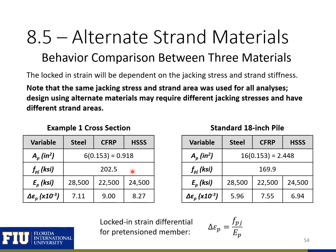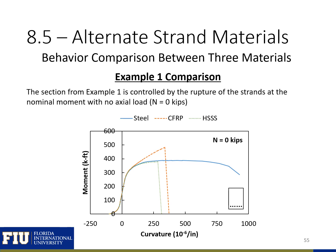For the rectangular beam from example 1 with no axial force, the comparison shows that conventional steel provides more ductility, the CFRP section has a higher ultimate strength due to the higher ultimate strength of the material, and the high-strength stainless steel beam has similar behavior to the conventional steel beam but fails at a smaller curvature.